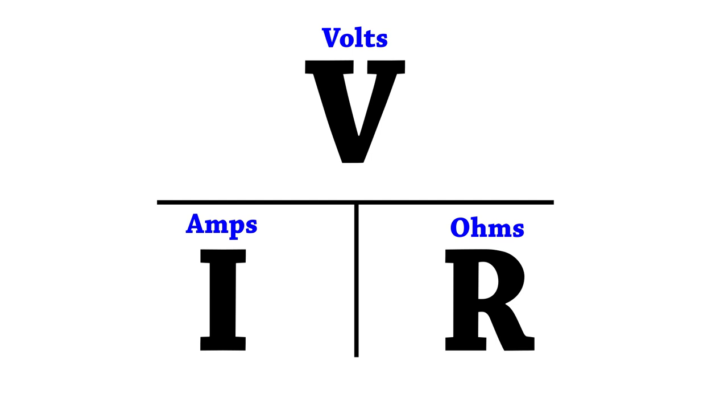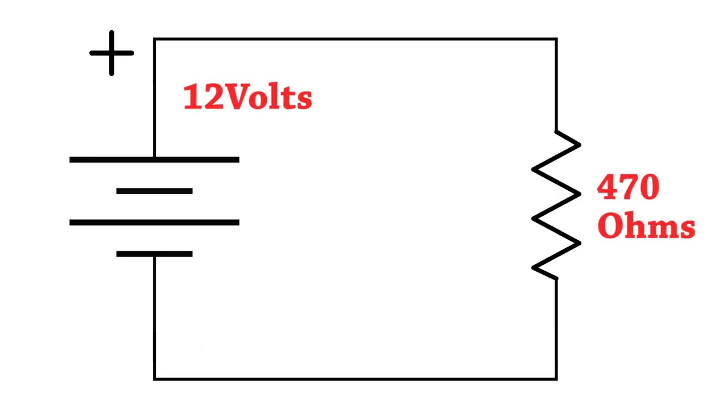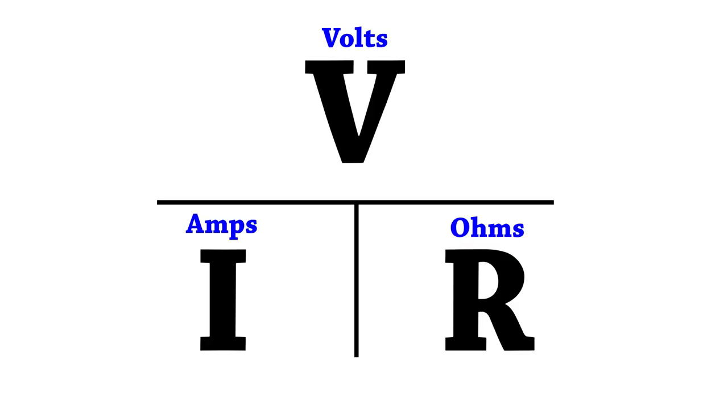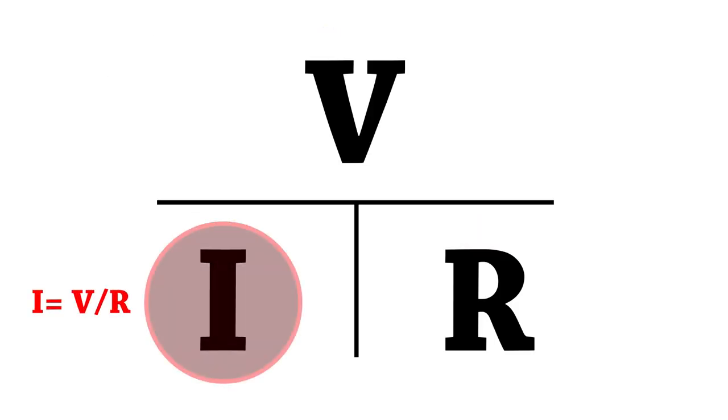The way we use this is by first determining what's missing. In our circuit with the battery, we know the voltage and we know the resistance. The unknown then becomes the current or the amperage. So you simply place your finger over the unknown. In this case, that's the current.